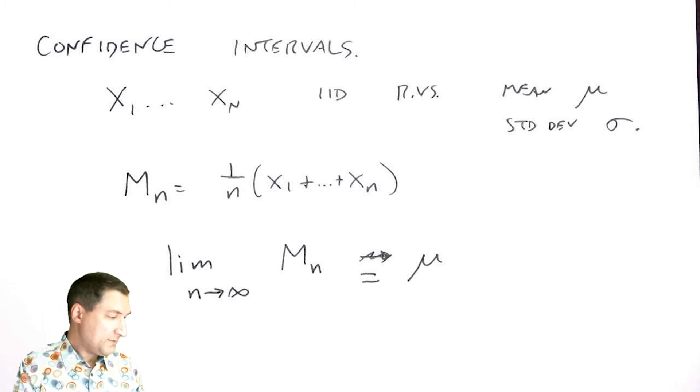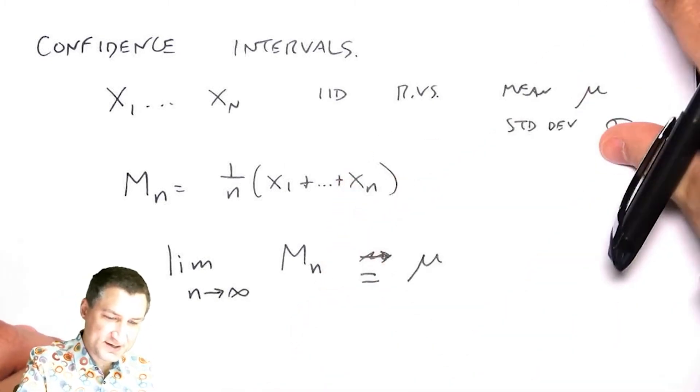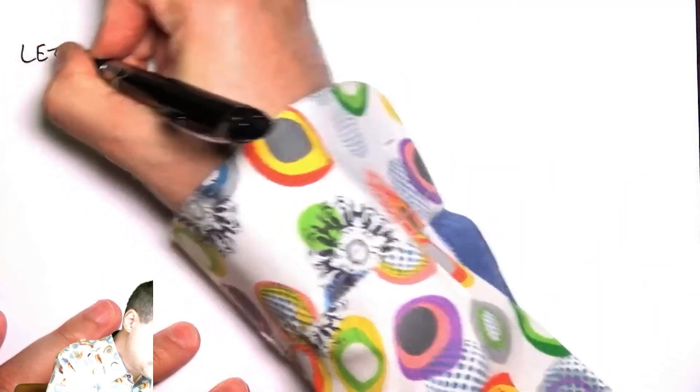In practice, I want to say: I see a bunch of data sampled from the distribution, what is a good range, an interval, that I can be pretty sure the mean is inside?